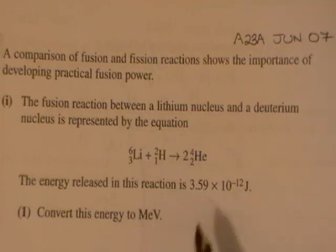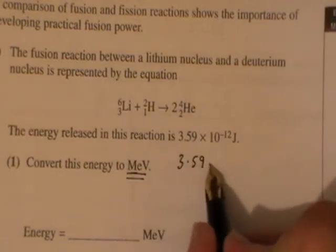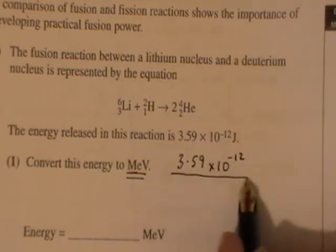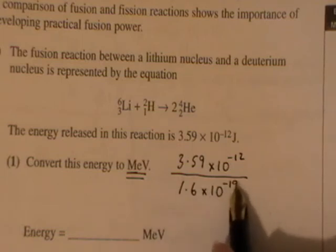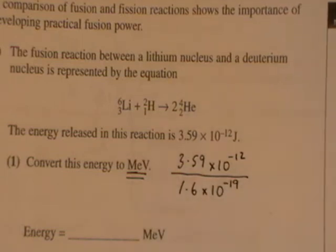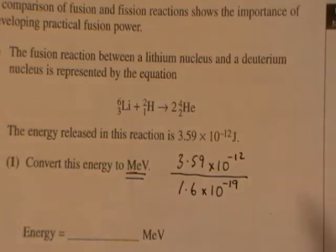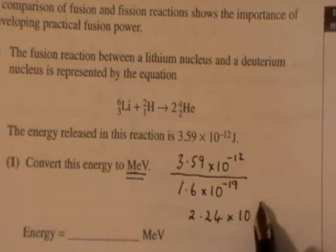The first part is to convert this to mega electron volts. In order to convert this, that's 3.59 times 10 to the minus 12 joules, so we need to divide that by the electronic charge 1.6 times 10 to the minus 19. That then gives a value of 2.24 times 10 to the power of 7.